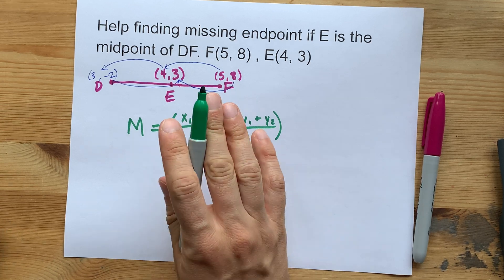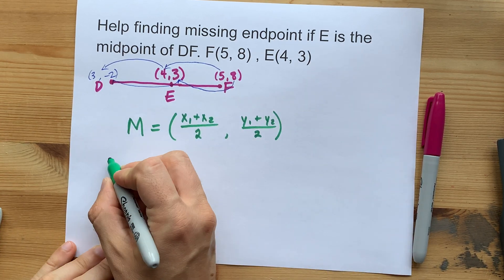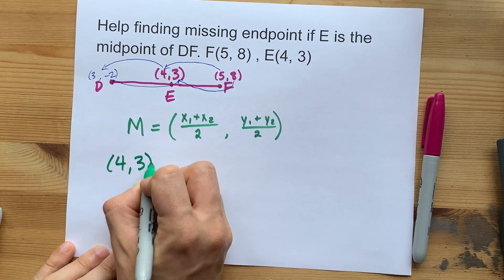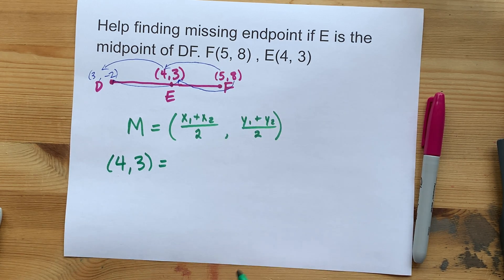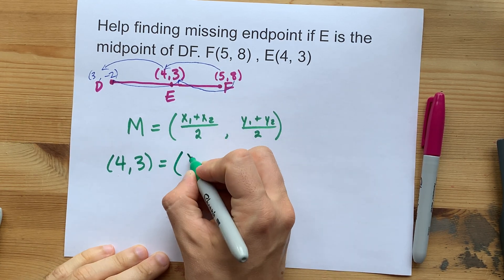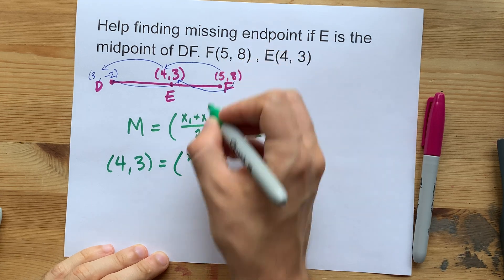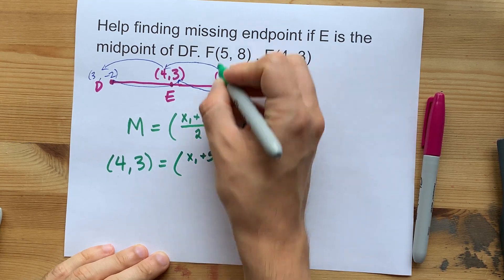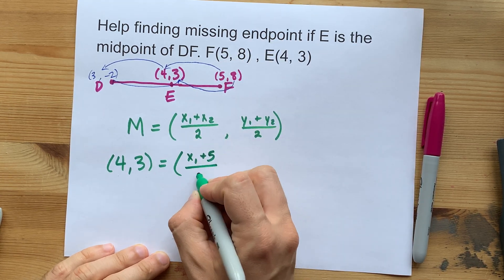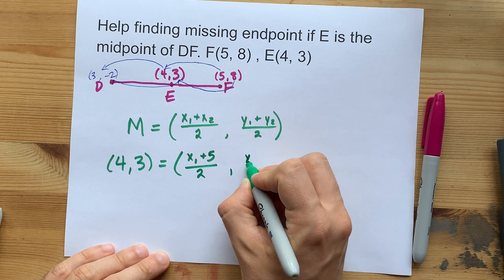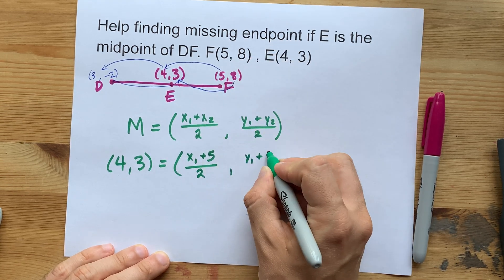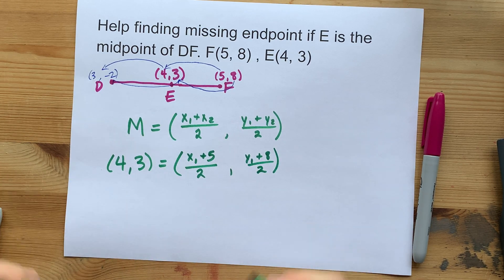Now, here you are actually given the midpoint itself, four comma three. And you were given one of the endpoints. So you can do X1 plus that five. That's one of the X coordinates of the endpoints we know. And Y1 plus eight. This is what your teacher probably wants to see set up.